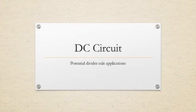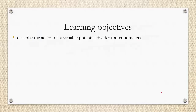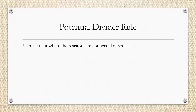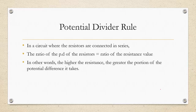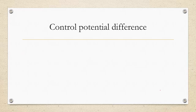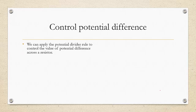In this lesson we are going to learn about potential divider rule applications. We will learn about the variable potential divider, which is called a potentiometer. As a recap, in a circuit where resistors are connected in series, the ratio of the potential difference across the resistors equals the ratio of the resistance values — in other words, the higher the resistance, the greater the portion of the potential difference it takes.